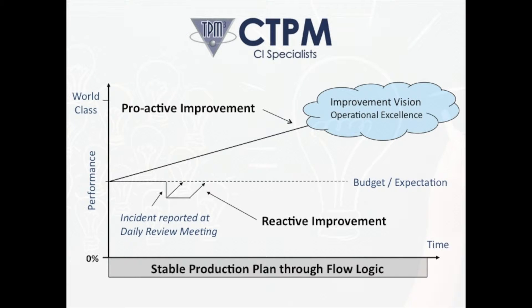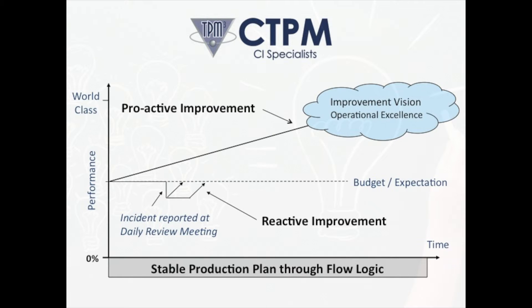As explained in our previous video, we identified three key parts to a continuous improvement strategy: one, reactive improvement; two, proactive improvement; and three, stable production plan through flow logic. The focus of this presentation is the importance of a stable production plan through flow logic to underpin and enhance both reactive and proactive improvement.